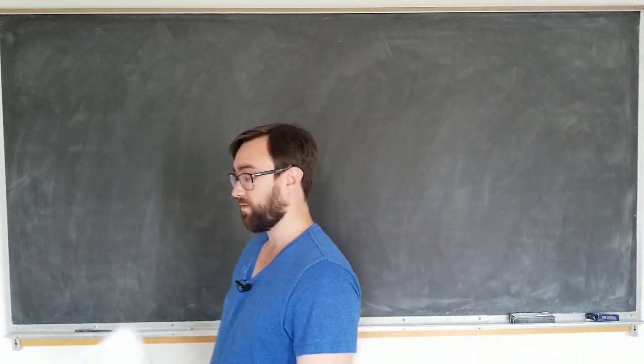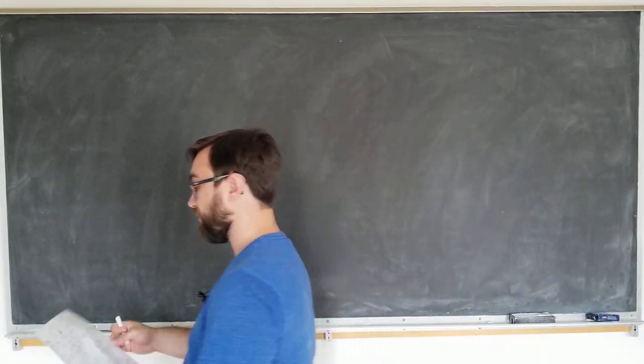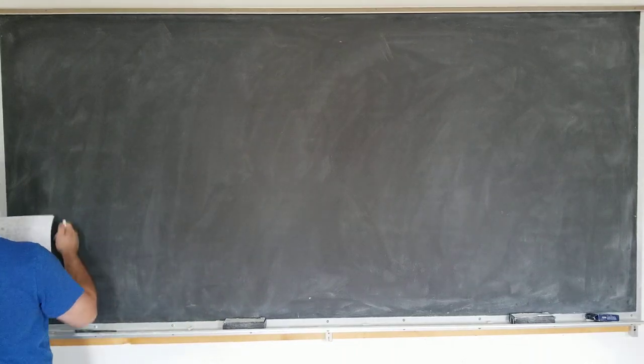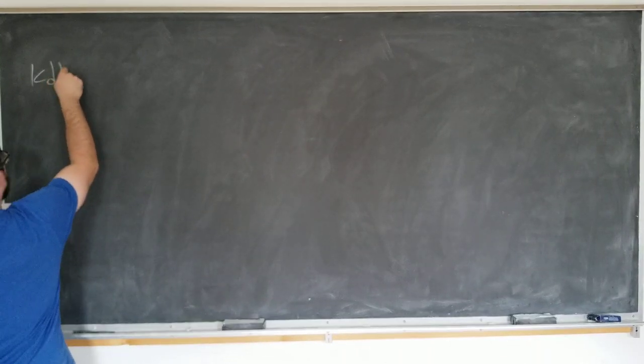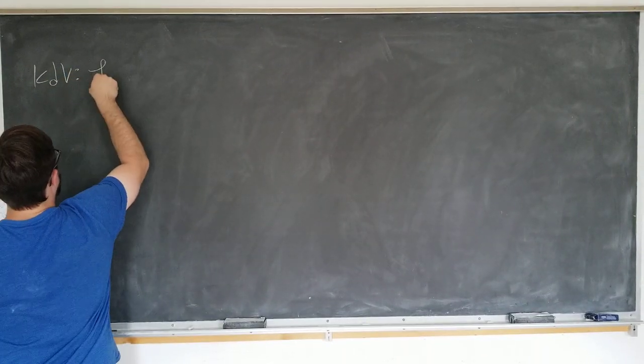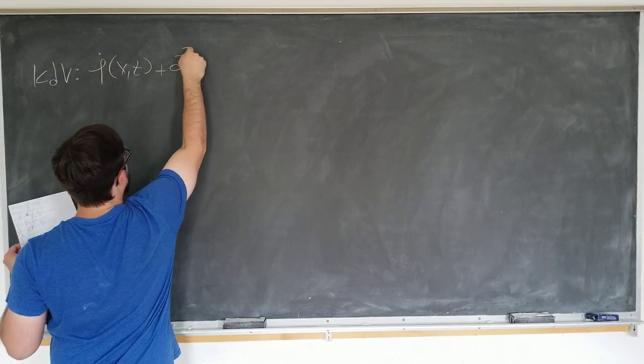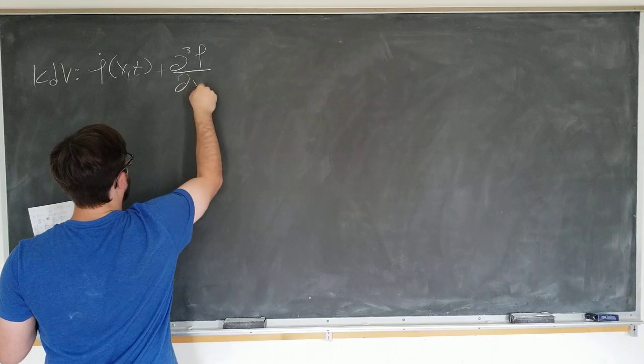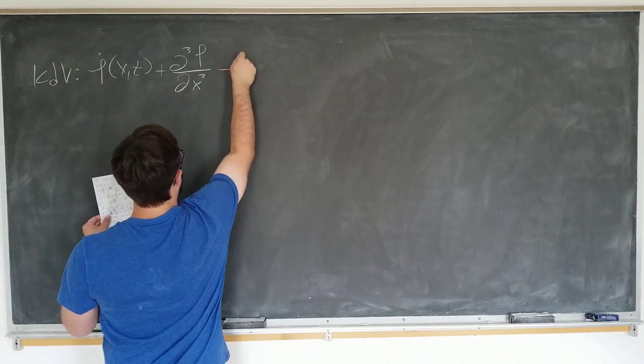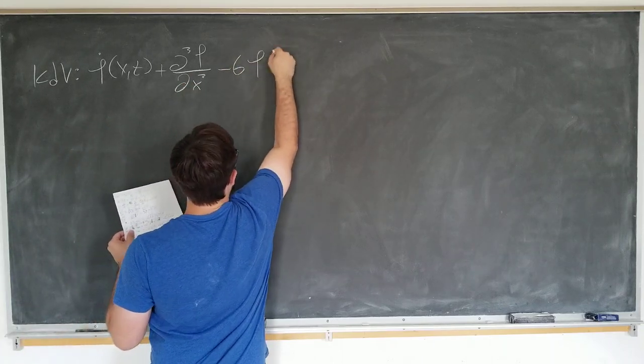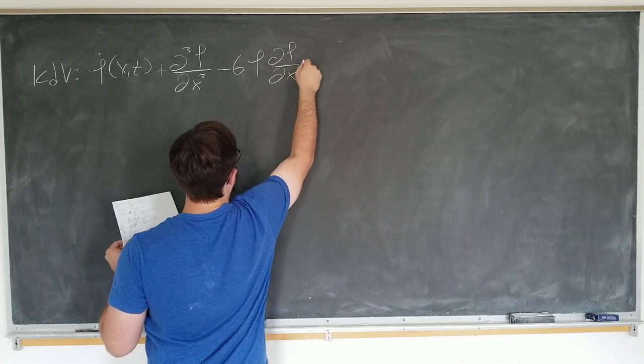Hi everyone, welcome to Mose of Math. Today we'll be talking about the KdV equation, which looks like this. It tells us that phi dot of x and t plus the third derivative of phi with respect to x minus 6 phi d phi by dx is equal to 0.